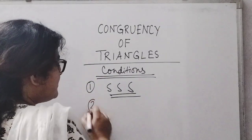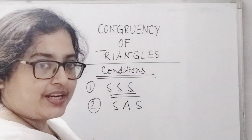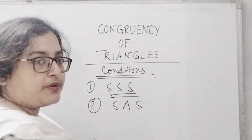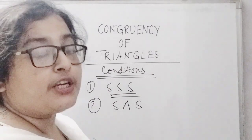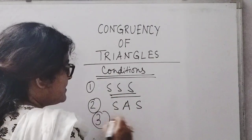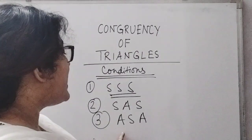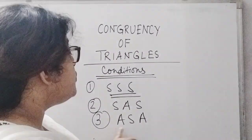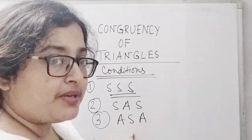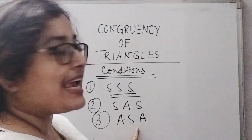The next one is SAS. If two pairs of corresponding sides and one pair of corresponding angles between the triangles are of equal measurements, then they are also congruent. The third one is ASA. If between two triangles you find that two pairs of corresponding angles and one pair of corresponding sides are equal in measurement, then you will conclude that they are congruent by ASA condition.